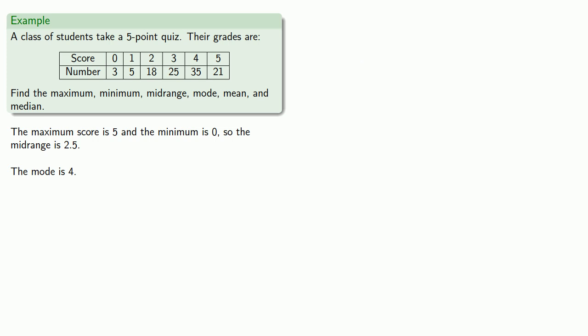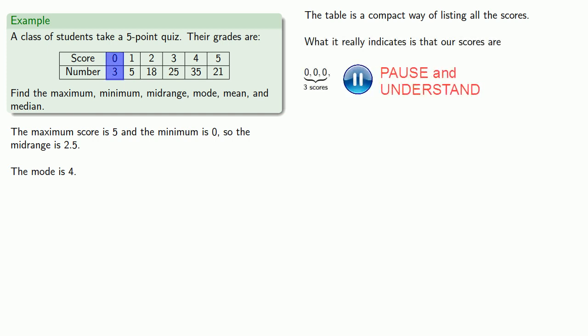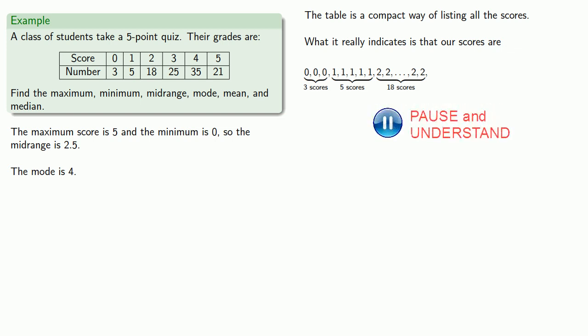How about the median? Remember, the table is a compact way of listing all the scores. What it really indicates is that our scores are zero three times, one five times, two eighteen times. We won't list all eighteen twos, but we'll use the ellipsis to indicate we've dropped out a whole bunch of scores that are still there. After that, we have a bunch of threes, a bunch of fours, and a bunch of fives.